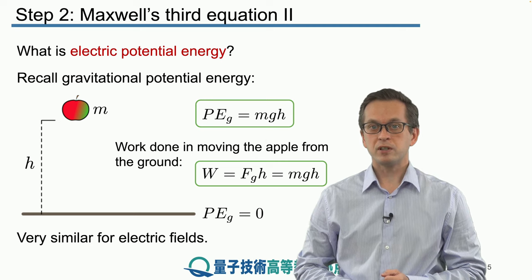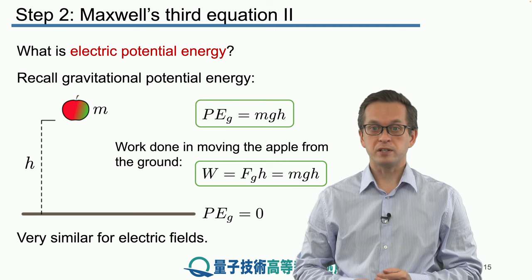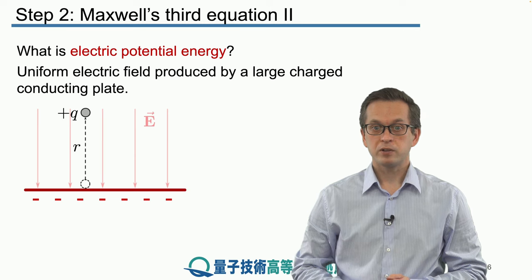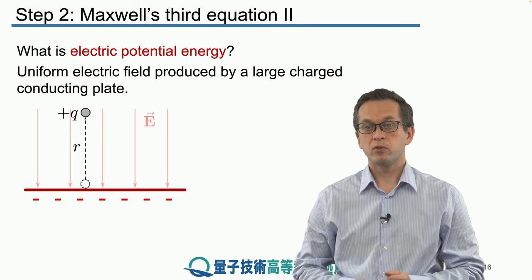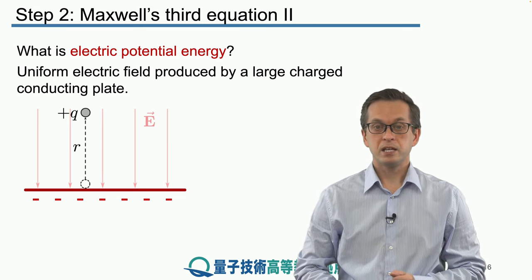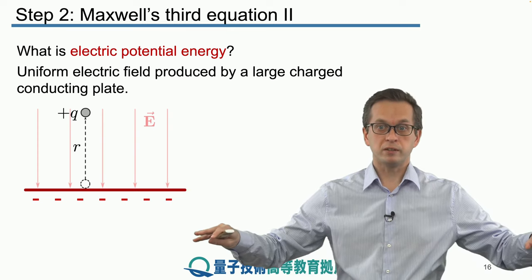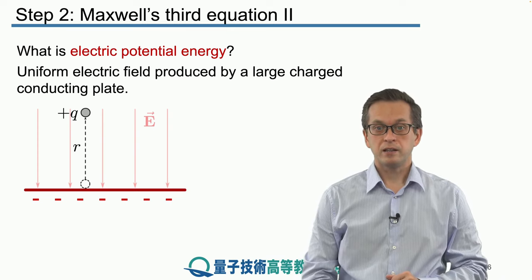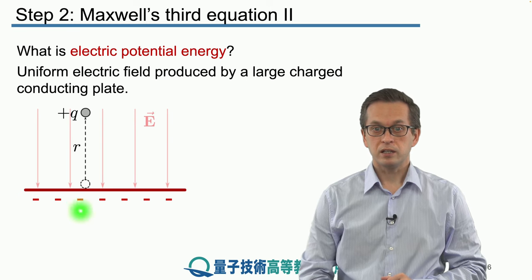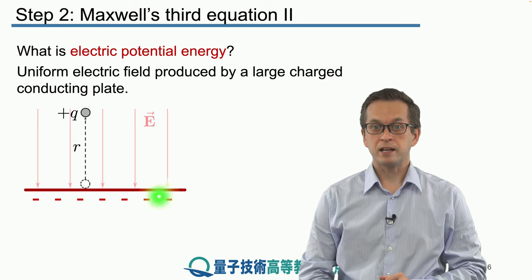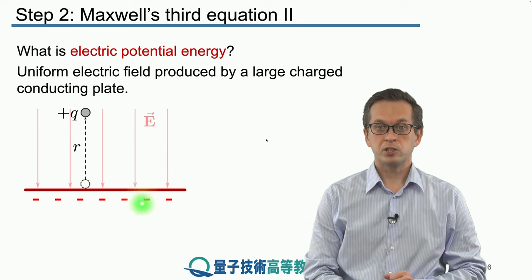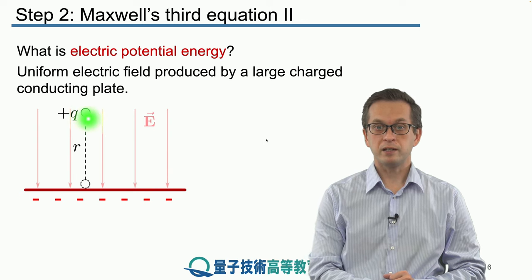The situation with electric fields and charges is very similar. Consider that you have some uniform electric field. And this can be produced by a very large sheet of metal, a very large conducting plate. And in this case, this plate is negatively charged.